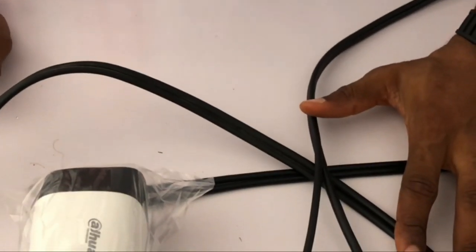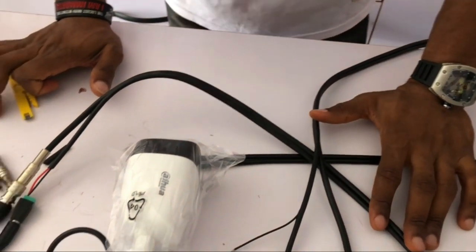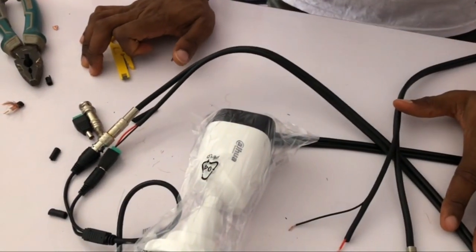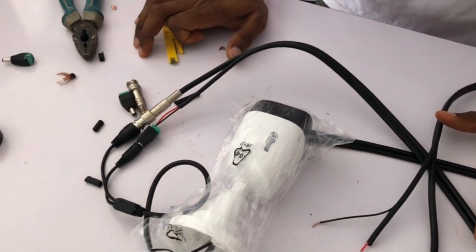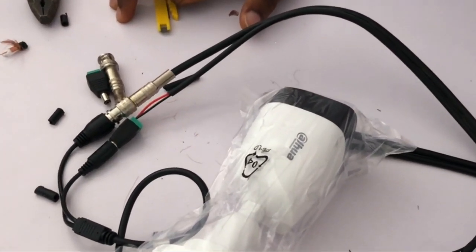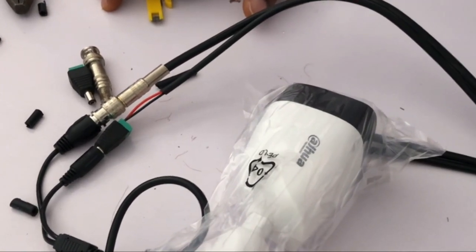So guys, that's just all about crimping of cable for analog camera. In my next video, we'll be talking on how we can view it on DVR, how to configure a fresh new DVR. Thank you and see you in the next video.